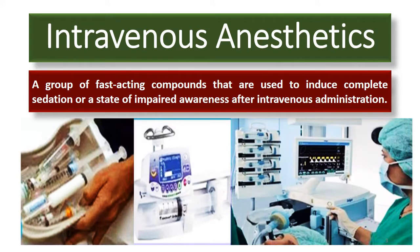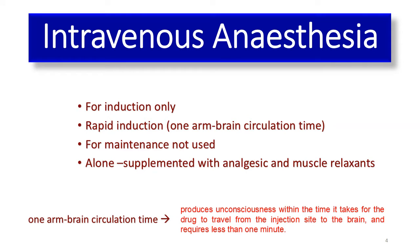Coming to today's topic: intravenous anesthetics. It is a group of fast-acting compounds that are used to induce complete sedation or a state of impaired awareness after intravenous administration. Intravenous anesthetic agents are used only for induction. There should be one arm-brain circulation time, meaning an IV anesthetic agent should reach the brain within a minute of injection, accounting for its rapid induction. It should not be used for maintenance of general anesthesia; maintenance is done by inhalational anesthetic agents.